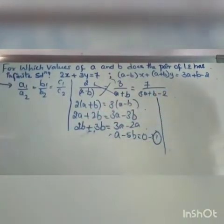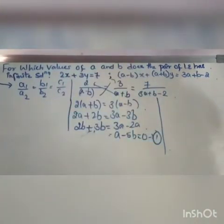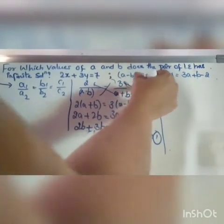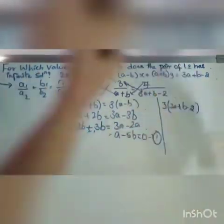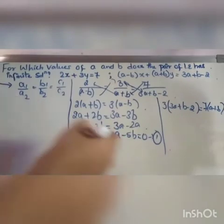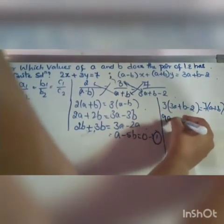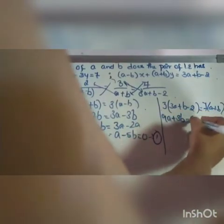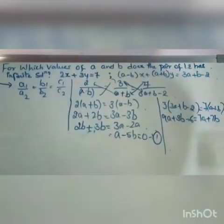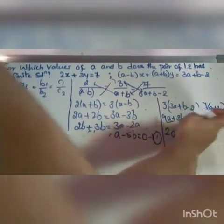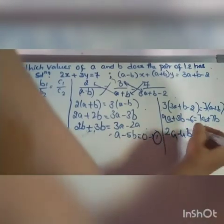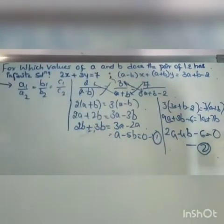Now taking the second and third ratios: 3/(a + b) = 7/(3a + b − 2). Cross multiplying: 3(3a + b − 2) = 7(a + b), so 9a + 3b − 6 = 7a + 7b. Simplifying: 9a − 7a = 7b − 3b + 6, giving 2a − 4b − 6 = 0. This is our second equation.